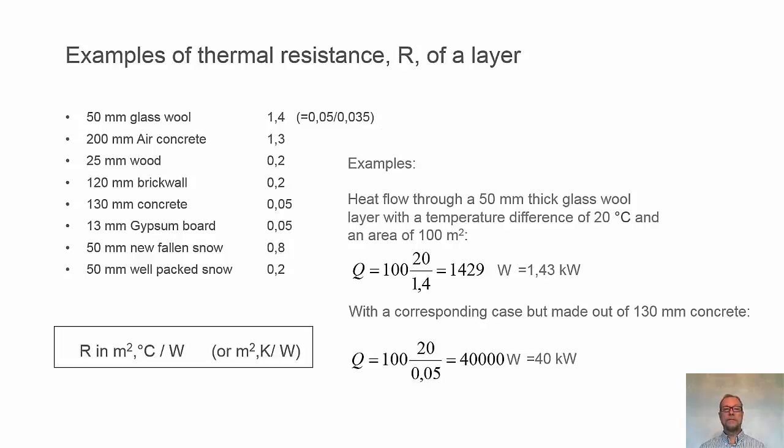Here are some examples of thermal resistances for different layers. First, 50 mm of glass wool, calculated by taking thickness 0.05 divided by thermal conductivity, that's 1.4. Roughly the same value as for 200 mm of air concrete or 25 mm of wood. We have brick wall, concrete, etc. Here we can compare how good they are in protecting a building from heat losses.